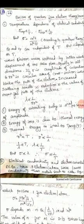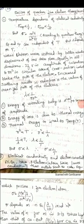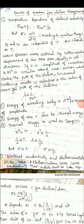In the quantum conductivity expression, n is the electron concentration, e is the charge on the electron, lambda is the mean free path, m star is the effective mass, and v_F is the Fermi velocity. According to quantum theory, E_F and v_F are independent of temperature, but the mean free path lambda depends on temperature.